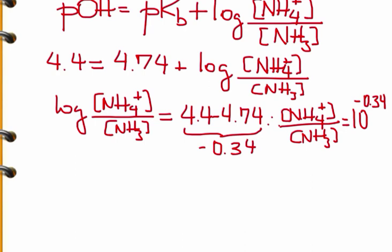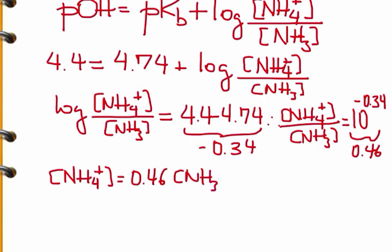Once you have that, you have the ratio: [NH4+]/[NH3] = 0.46. Now we can say that [NH4+] = 0.46[NH3].